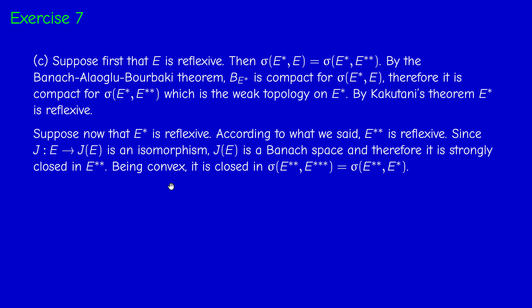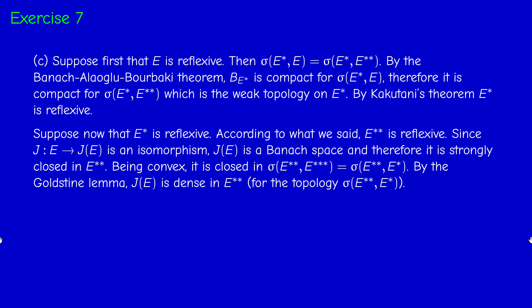Since E double star is reflexive, the weak topology and the weak-star topology on E double star are the same. By the Goldstein Lemma, J(E) is dense in E double star for the weak-star topology, and therefore for the weak topology. Since J(E) is both dense and closed, J(E) equals E double star. Therefore J is surjective and E is reflexive.